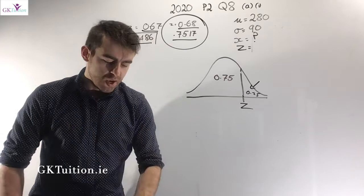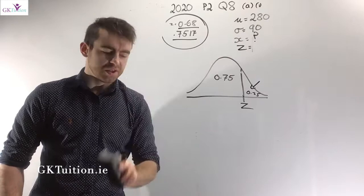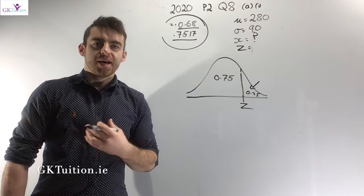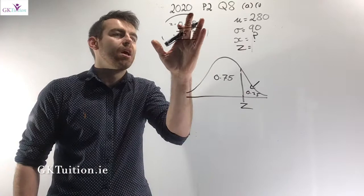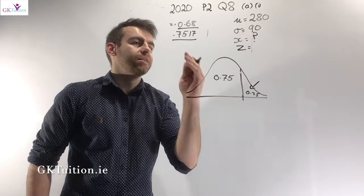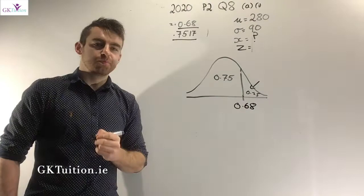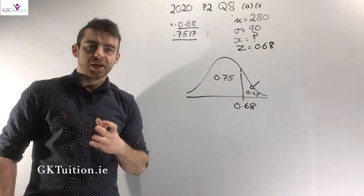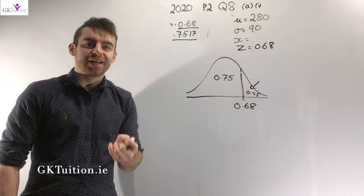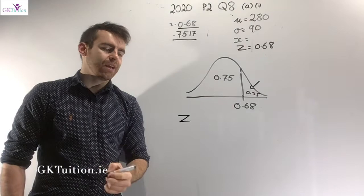Once you've selected 0.68, the rest of the question is relatively straightforward. Based on the maths tables we can only be accurate to two decimal places for Z-scores. The minimum Z-score that would allow someone to be called back for interview is 0.68. I know the population mean is 280 and the standard deviation is 90, so the only unknown is x — what mark someone would need to get to be called back.